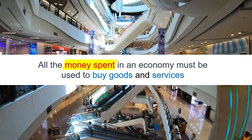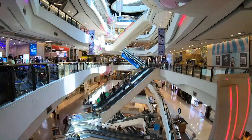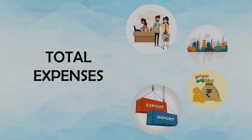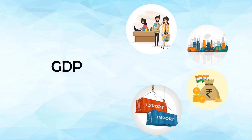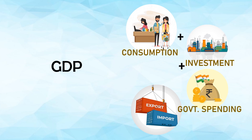The logic is that if people and organizations are buying things, it means those things are being produced and sold. The formula for this approach is: GDP = Consumption, which includes all spending by households on goods and services, plus Investment, which covers spending by businesses on capital goods, plus Government Spending, which accounts for all government expenditures, plus Exports minus Imports.